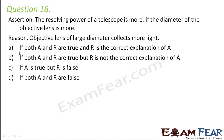We have to tell if both the statements are true, if both are false, or if one of these is true. So the assertion says: the resolving power of a telescope is more if the diameter of the objective lens is more. Now before that, what is resolving power? In layman's terms, it is the ability of the telescope to distinctly show two very closely located points. That's resolving power.